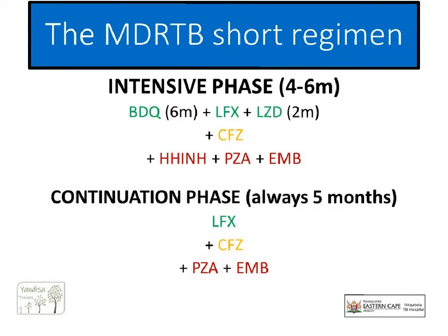Let's look a little bit closer at these seven initial drugs. Our backbone is made up of our three Group A drugs — the Mercedes-Benzes of our treatment choices: bedaquiline, levofloxacin, and linezolid. Added to these is our least toxic Group B drug, our Toyota — for this regimen we have chosen clofazimine. The last three are our classic first-line TB drugs — the Tatas, not as good as the others but there for a little extra boosting: high-dose INH, PZA, and ethambutol.